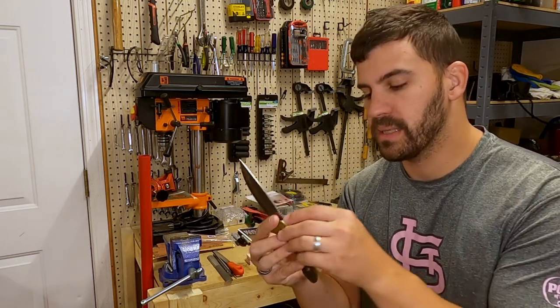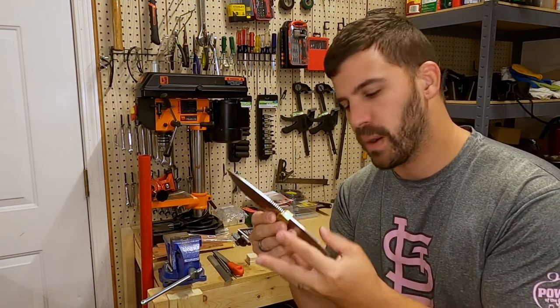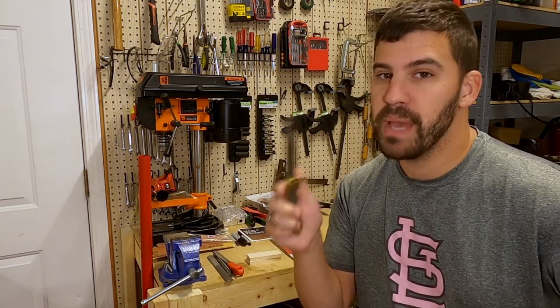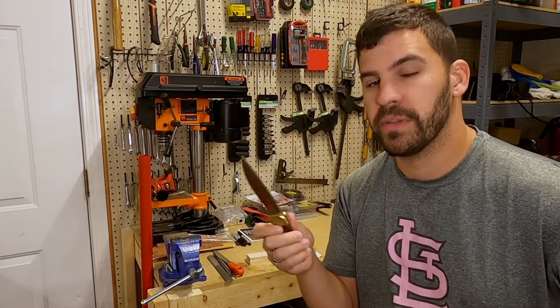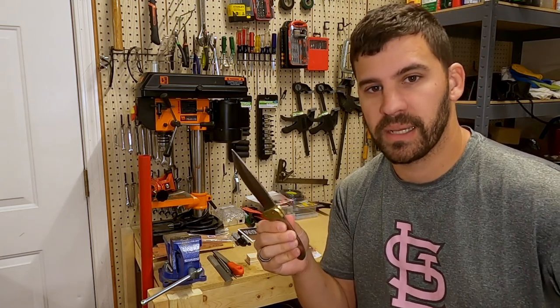Today we're going to epoxy the bolsters to the blade, the handle to the blade, and begin finalizing the rough shape of the handle and the bolsters. This may be the last episode of this series, so stay tuned to the end to see what the final knife looks like.